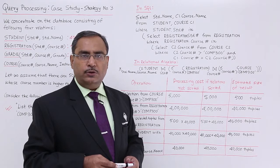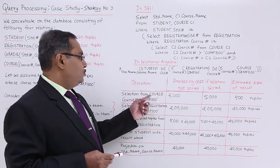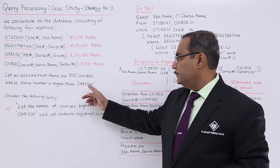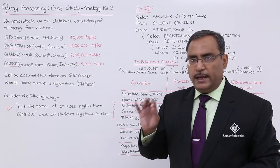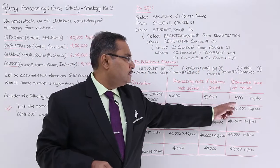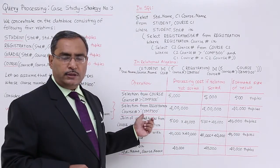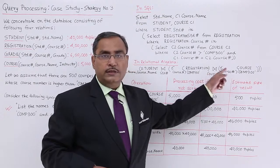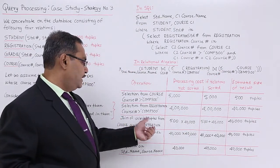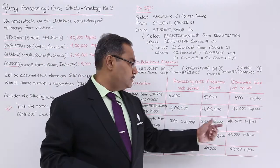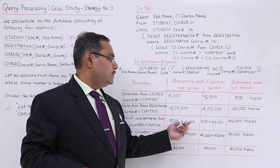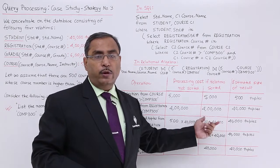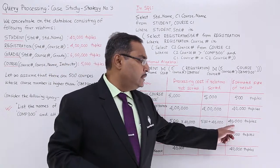Let me go for the complexity calculations in terms of tuple count. From the course table, if we apply the selection criteria, from 5000 we get 500 — because only 500 courses have course number greater than COM300. From the registration table applying the same condition — course number greater than COM300 — out of 4 lakh tuples we get 40,000. Now we go for the natural join of the selected tuples from course and registration. Joining can be done in unsorted fashion, involving multiplication, or in sorted fashion, involving addition. We have discussed this in earlier videos. The resultant tuple count will be 40,000.